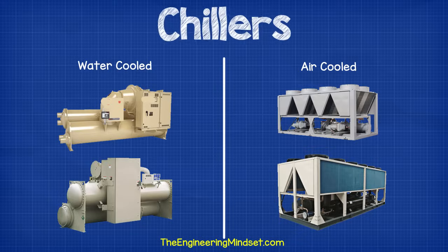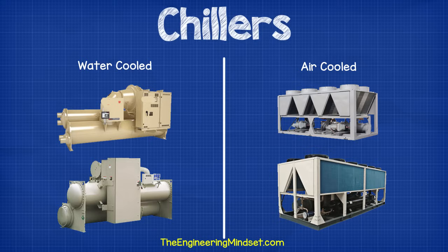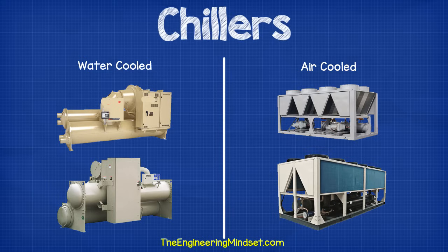So first of all, let's take a look at chillers. Chillers are used to generate chilled or cold water, which is pumped around the building to provide air conditioning by collecting unwanted heat. There are two main types of chillers, which are air-cooled or water-cooled. The term water or air-cooled just tells the engineer how the chiller's condenser is rejecting heat from the building, and we're going to cover how both these work in just a moment.